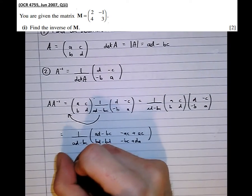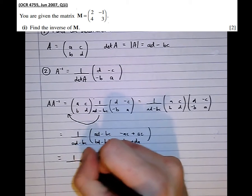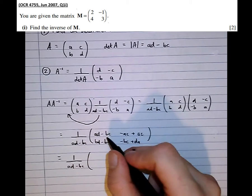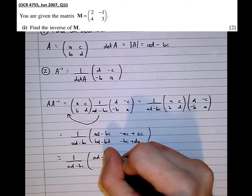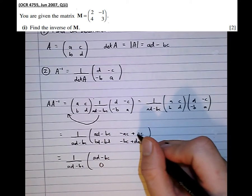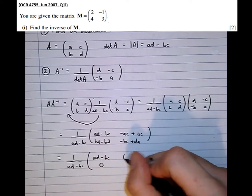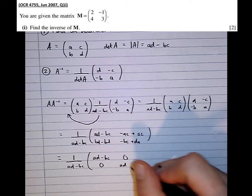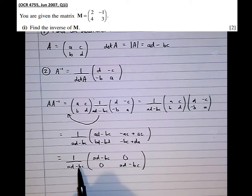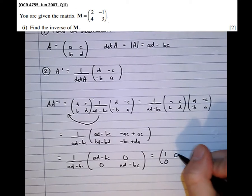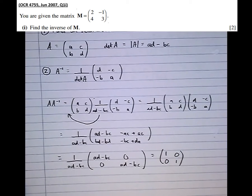Rewriting that in a tidier way, we get 1 over (AD minus BC) times the matrix: AD minus BC, 0, 0, AD minus BC. That top-right entry BD minus BD equals 0, bottom-left minus AC plus AC equals 0, and the bottom-right DA minus BC equals AD minus BC. Dividing by the determinant, we end up with 1, 0, 0, 1 — the identity matrix. We've proved that that is the inverse.